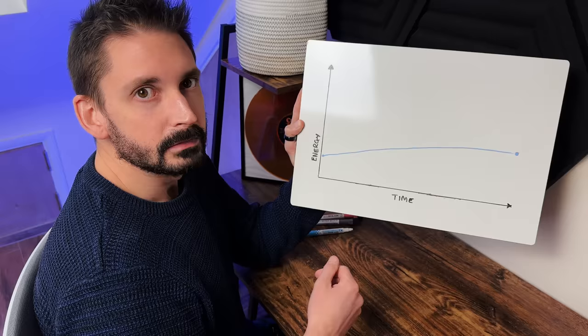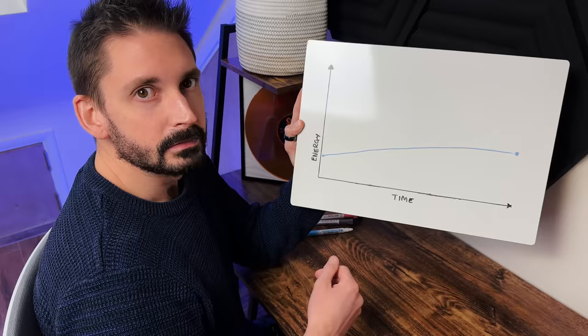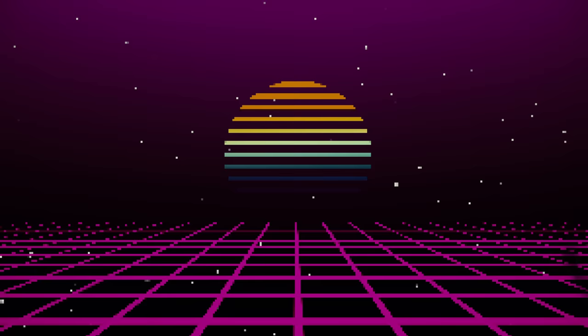Let me explain this chart. On the left we've got energy going from low to high, and along the bottom we've got time, which represents the time of your set. If you're the opening DJ, generally speaking you want to start at a relatively low energy level and slowly bring it up over the course of your set. Not too high though — remember you're not the headliner and the night's only just getting started.